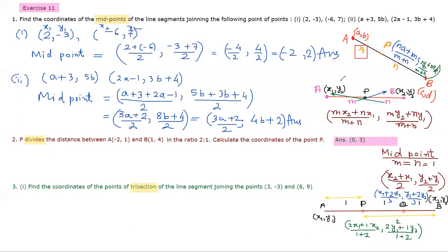Now we use the section formula logic — the ratio and ratio sums. If P divides AB in the ratio M:N, then M will be multiplied with the coordinates of B and N will be multiplied with the coordinates of A. Draw a simple figure: put point A which is (-2, 1) and point B which is (1, 4). P divides in ratio 2:1, so this portion is 2 and this portion is 1.